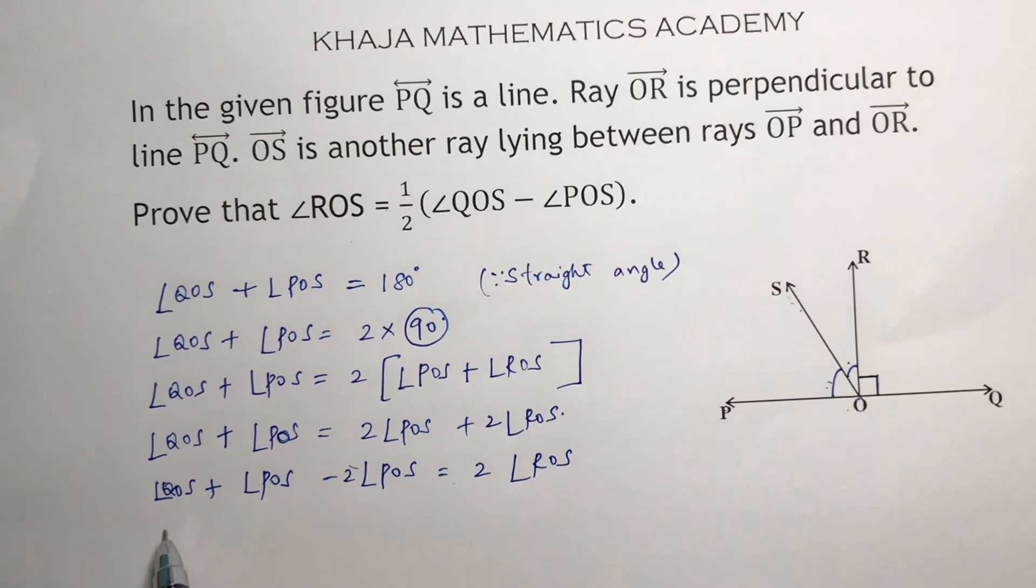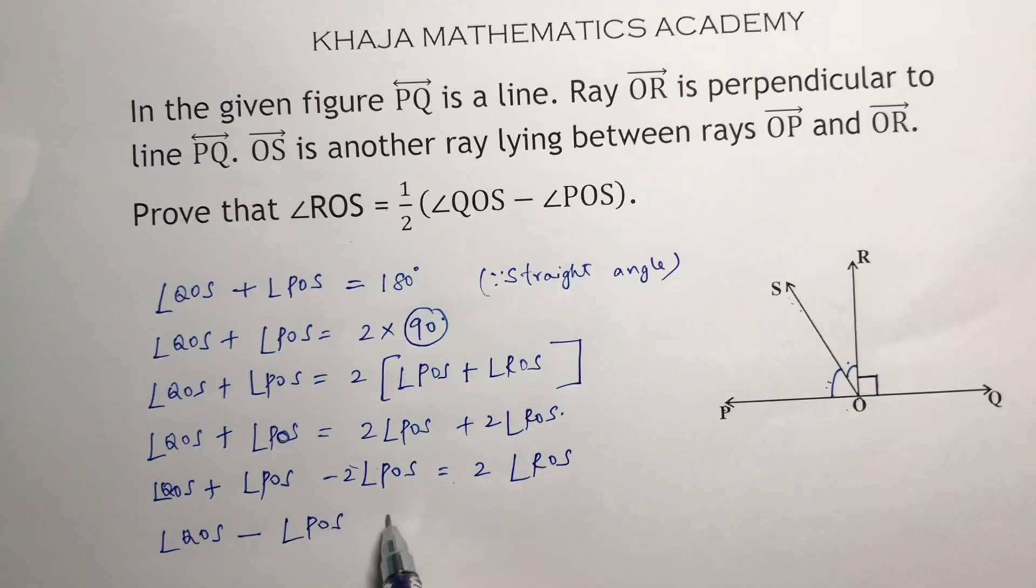So, now here QOS, one angle POS minus 2 angle POS is minus angle POS equals 2 times ROS.